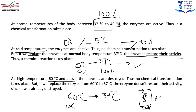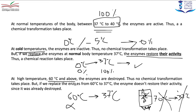Suddenly the temperature became 70 degrees Celsius — there was overheating — and I was using human enzymes. At 70 degrees Celsius, I destroyed the enzymes. If I went back and returned to 37 degrees Celsius, no digestion will take place because the enzyme was already destroyed at 70 degrees Celsius. There will be no chemical transformation.